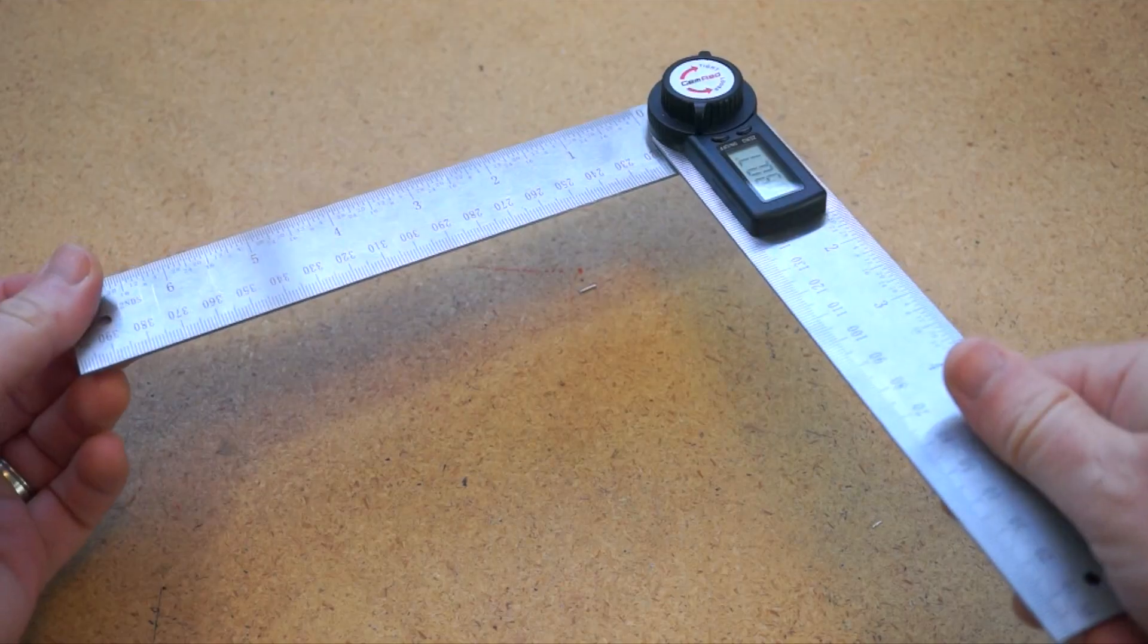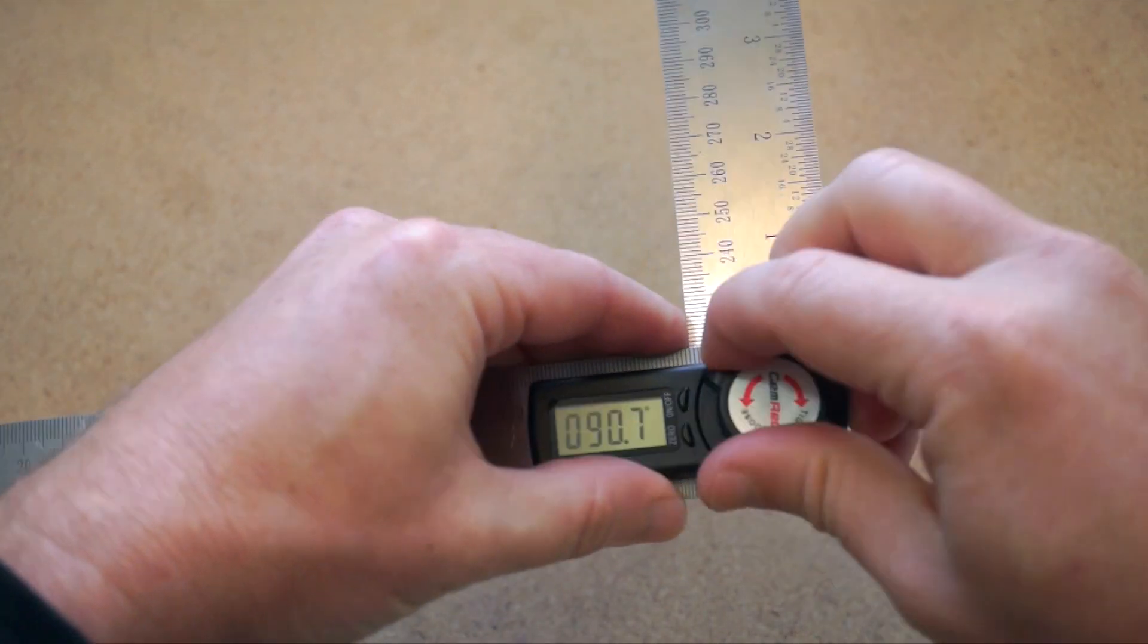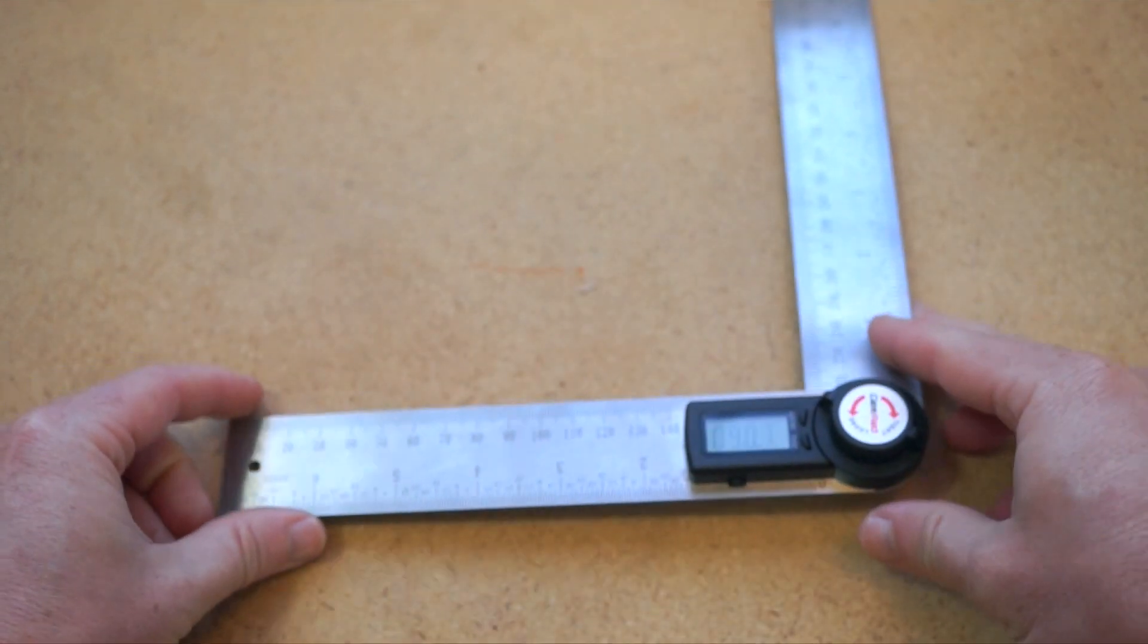The zeros match up at a 90 degree angle so it can sort of double as a square, but in general it's not my first choice as a ruler.